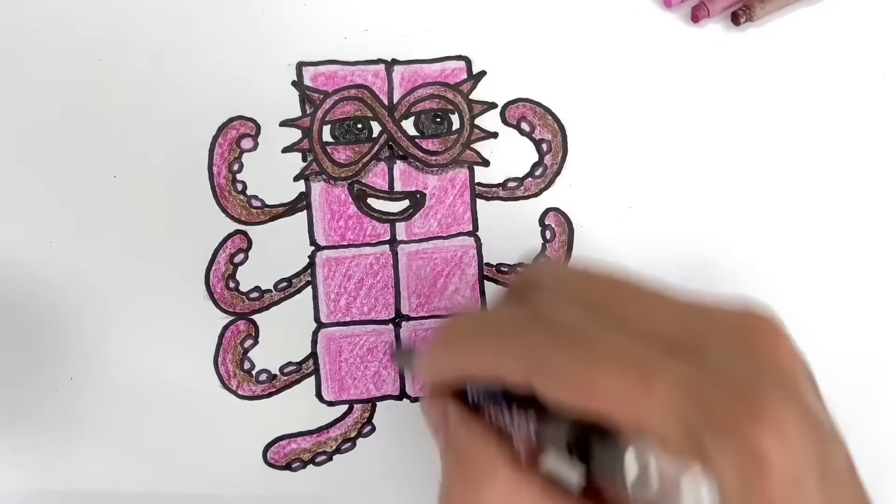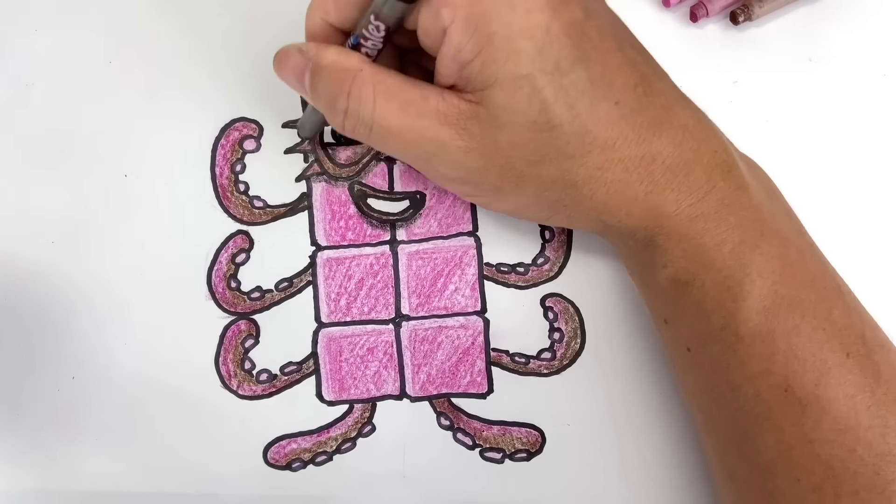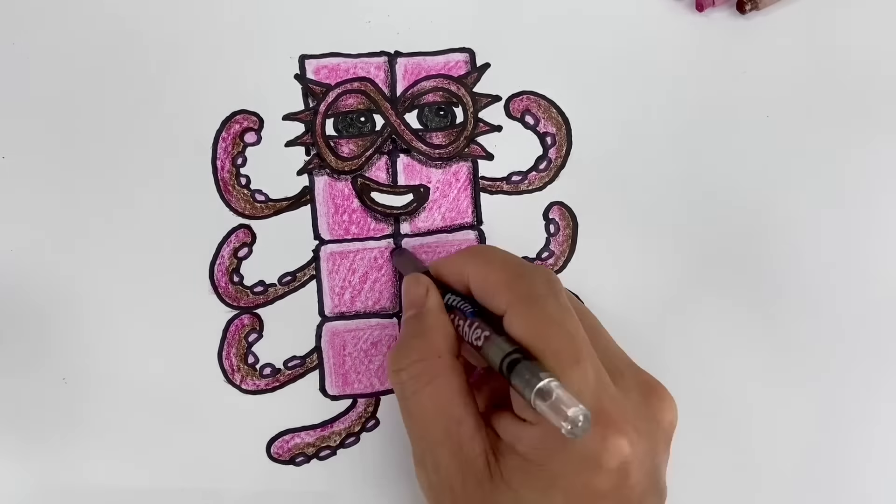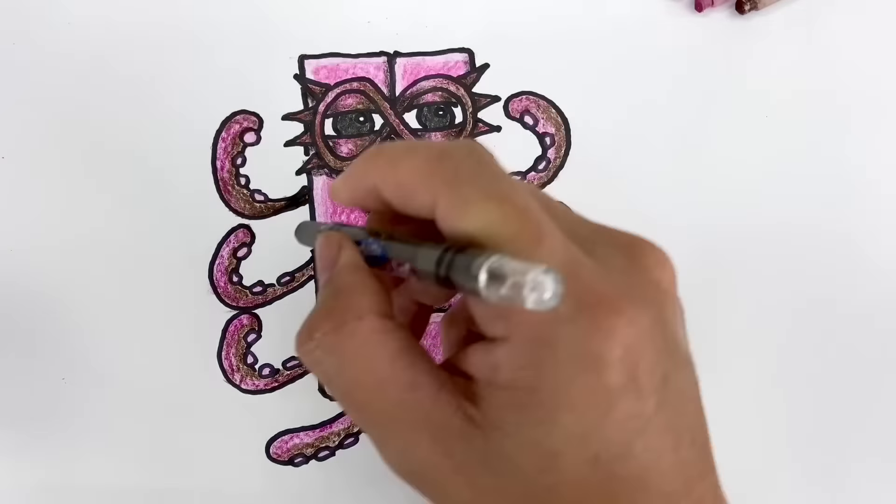Also use black to add shadows under his mask, mouth, and the lower right edges of his blocks. Also add shadows on the inner, lower parts of his arms and legs. Add a shadow too under his legs so it will look like he's standing on the ground. And of course, don't forget to add his numberling!